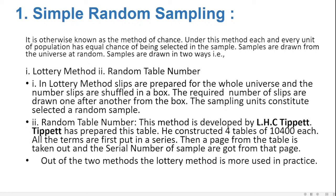Under the lottery method, slips are prepared for the whole universe and the required number of slips are drawn one after another. This is a very common method. The lottery method is more suitable and commonly used in practice. Another method is the random number table.